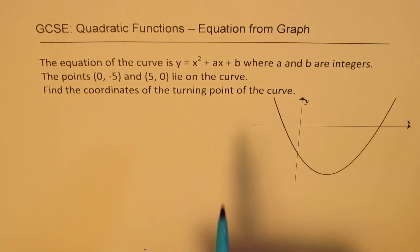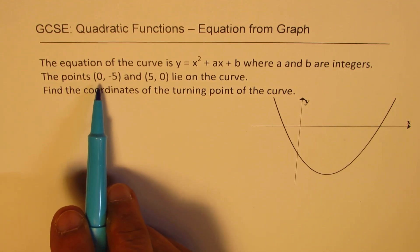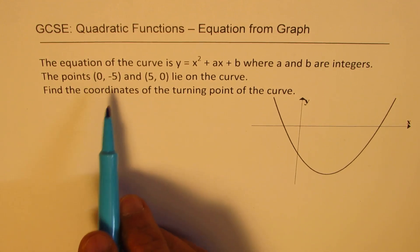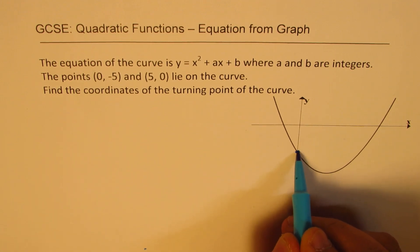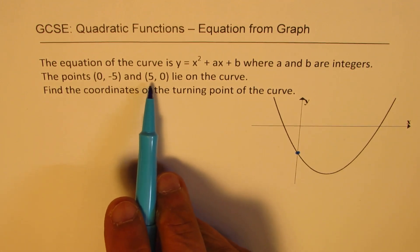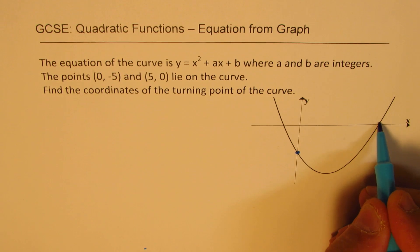So here is the parabola which represents the quadratic equation. We are given two points. One is (0, -5), that is the y-intercept, and the other one is (5, 0), which is the x-intercept.